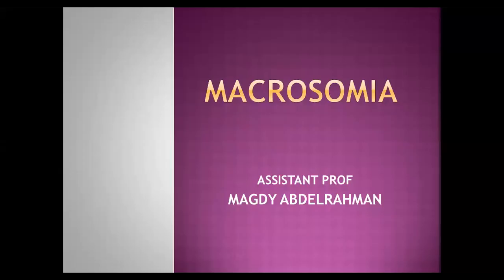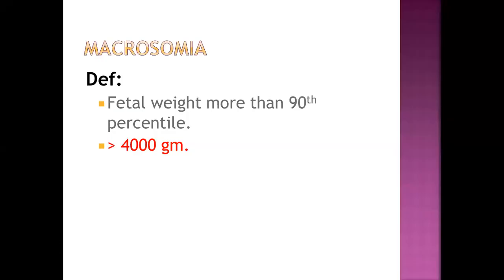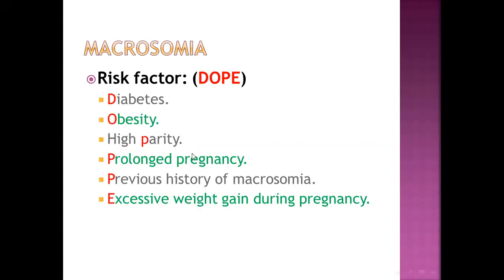Macrosomia, or increased fetal weight — what's meant by macrosomia? It's fetal weight more than the 90th percentile of normal, or more than four thousand grams (four kilograms). What are the risk factors? To summarize the risk factors, the mnemonic is DOBE.